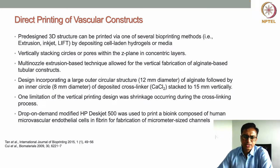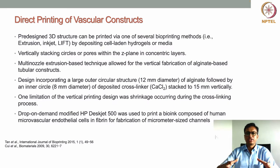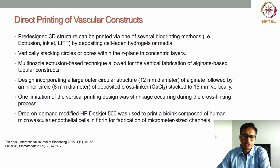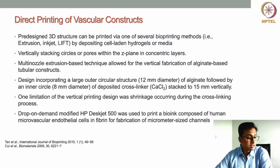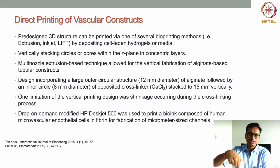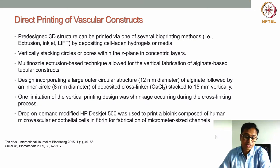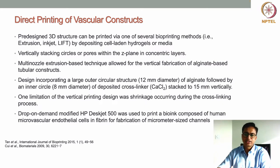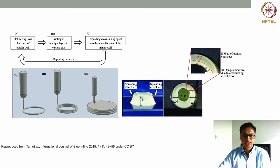A study by Tan et al. vertically stacked circles or pores within a z-plane in concentric layers using a multi-nozzle extrusion-based system. They printed alginate-based cell-laden hydrogel in concentric cylinders, with an outer circular structure of 12 mm diameter and an inner circular structure of 8 mm diameter. Calcium chloride solution was deposited in the inner circle, and this step was repeated to get a 50 mm vertical cylinder structure.